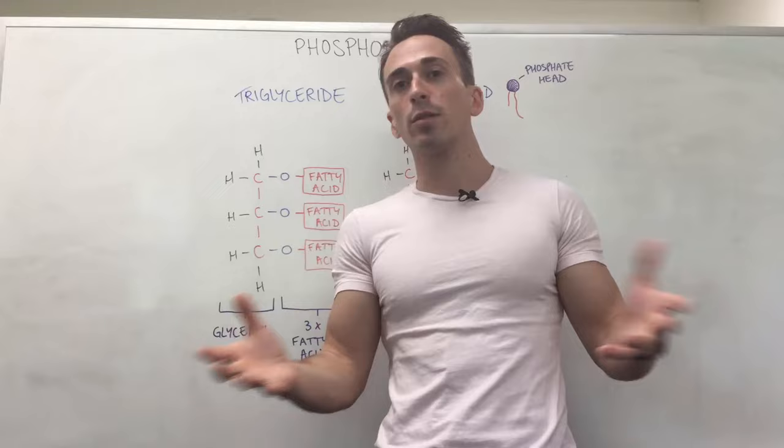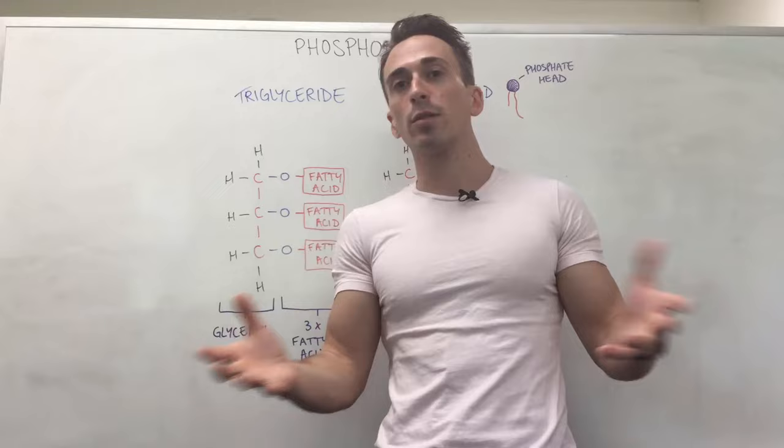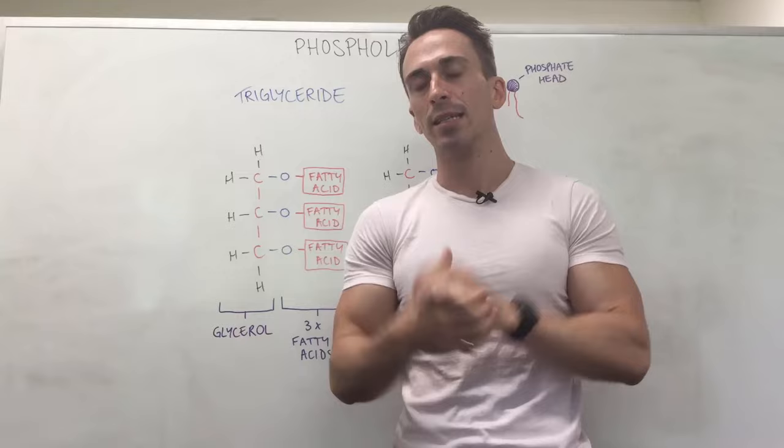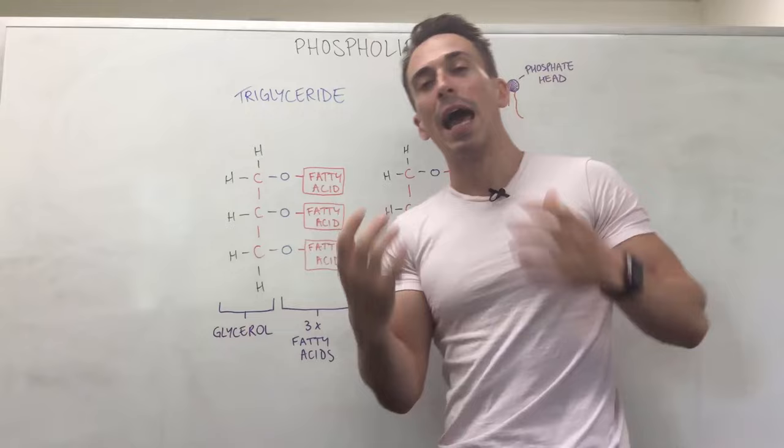And it's attached to three individual fatty acids. And I told you it can be many different types of fatty acids. They can be saturated, monounsaturated or polyunsaturated fatty acids. And depending on the quantity of each of those depends on whether it's going to be a liquid or solid at room temperature. So this is a triglyceride.